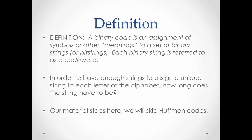Our last topic is the definition of a binary code. A binary code is an assignment of symbols to a set of binary strings, where each binary string receives one of the symbols. For example, suppose we take the alphabet: we would assign the letter A to one binary string, the letter B to another binary string, and so forth. Each binary string would be referred to as a code word.